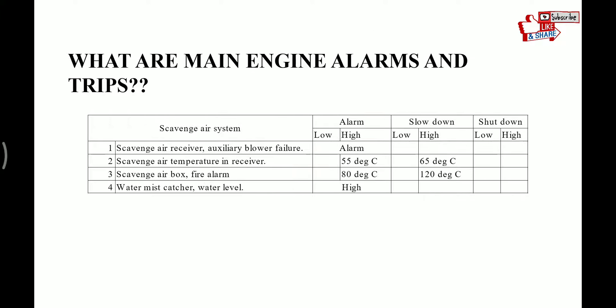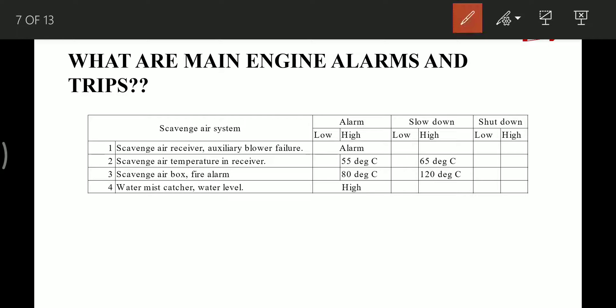The scavenge system: scavenge receiver auxiliary blower failure gives alarm. Scavenge receiver temperature — high alarm at 55°C and slowdown at 65°C. Scavenge box fire alarm — alarm at 80°C and slowdown at 120°C. Water mist catcher water level: gives high level alarm if water level in the catcher is high.